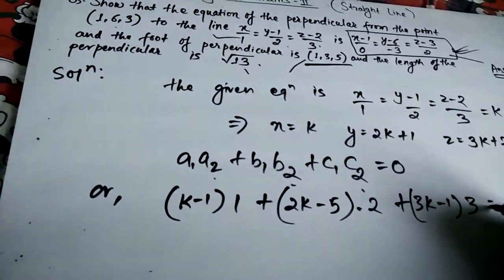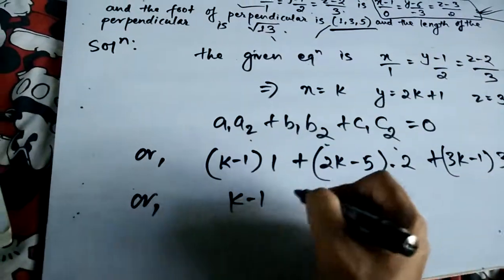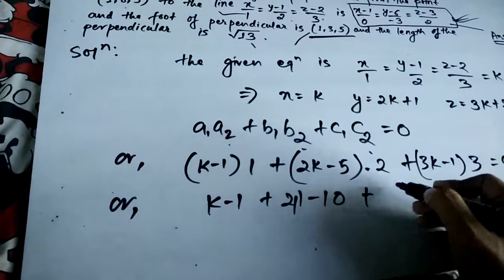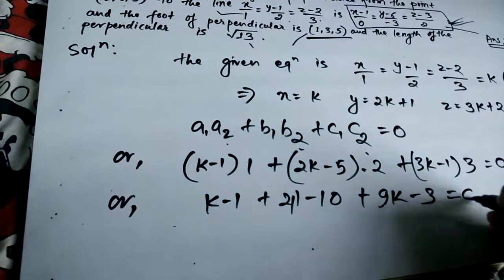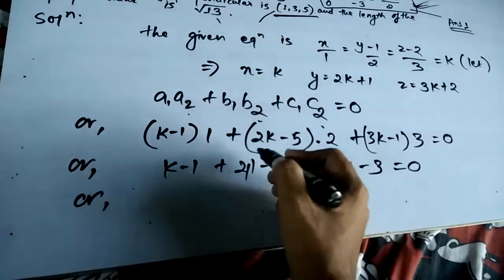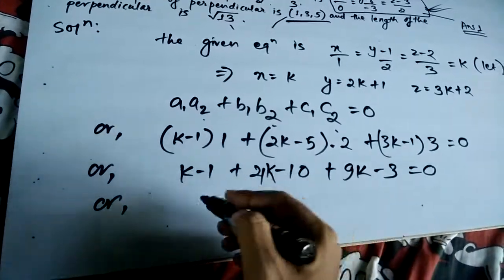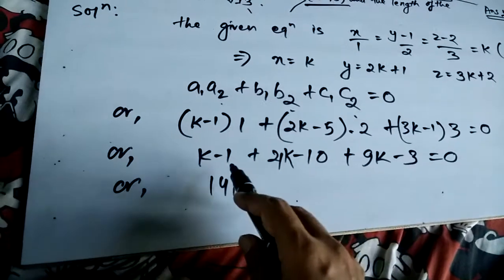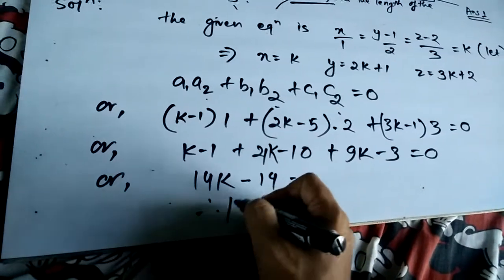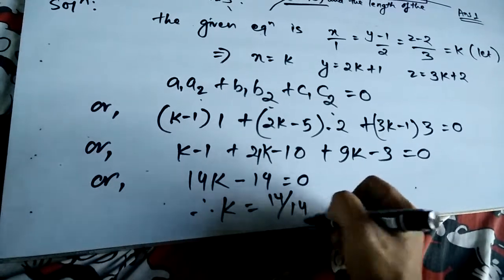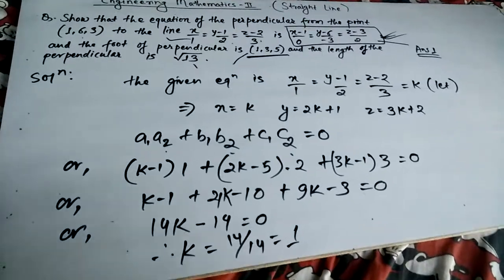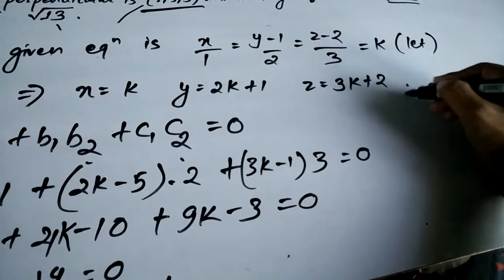Expanding: (k-1) + (4k-10) + (9k-3) = 0, which gives 14k - 14 = 0, therefore k = 1.